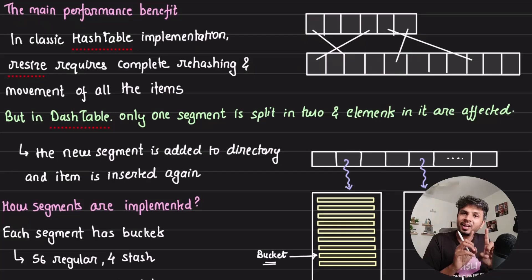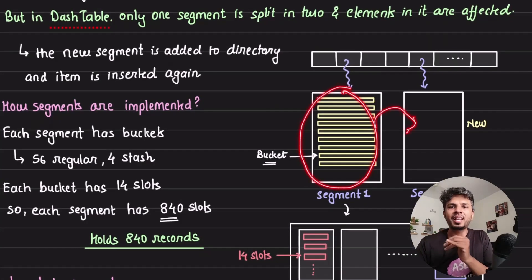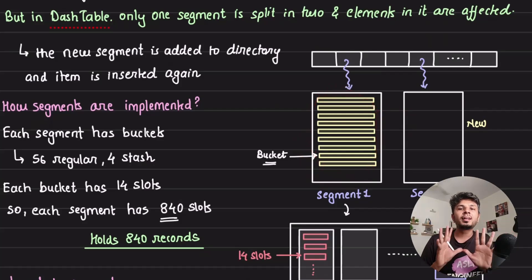But on the other hand, in the dash table, I'm only affecting the segment that was full, creating a new segment out of it. And then just the elements present in this segment are getting affected. There is minimal data movement which is required. This is the main performance benefit that you get out of it.